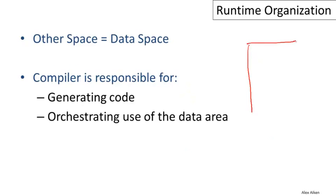Coming back to our picture, we have memory with the first portion occupied by generated code. The rest is the data space. The compiler is responsible for generating code and orchestrating the data layout, then generating code that correctly manipulates that data. The code and data layout need to be designed together so the generated program functions correctly.